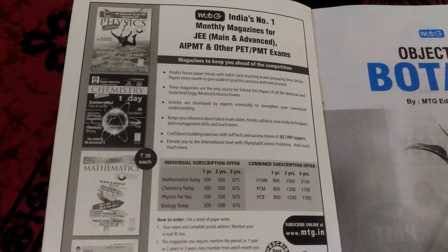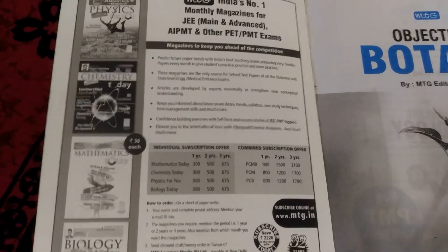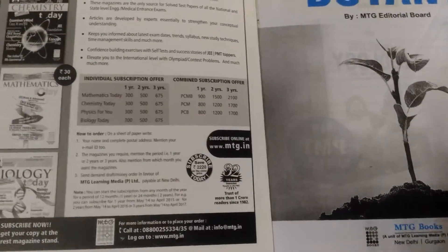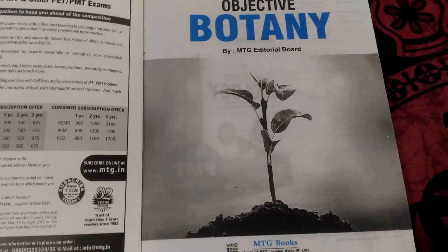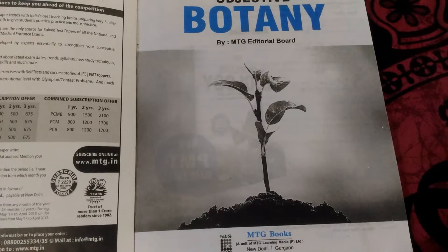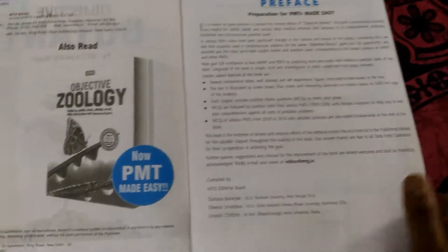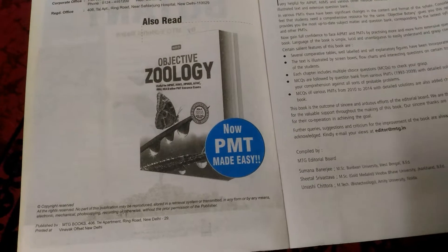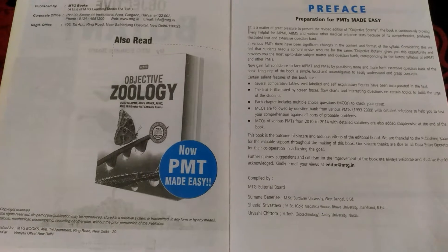It's also important for Joint MSc level examinations. You should also buy this book. There are various variations including physics, chemistry, mathematics, and biology, all published monthly. This is made by the MTG editorial board, and you can also purchase Objective Zoology. In the next video, I will discuss Objective Biology by MTG.